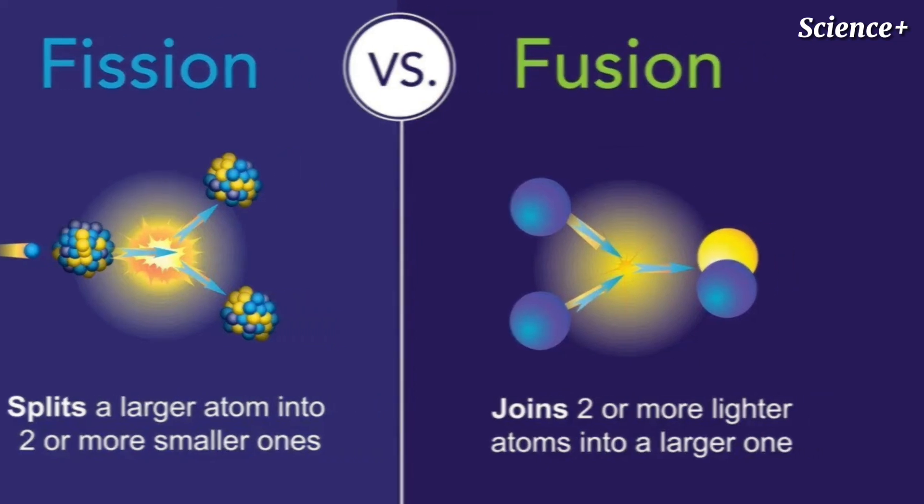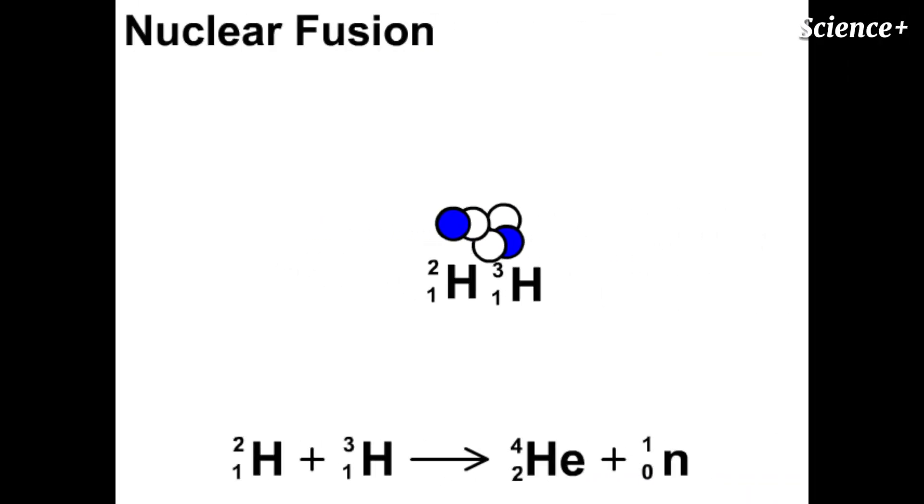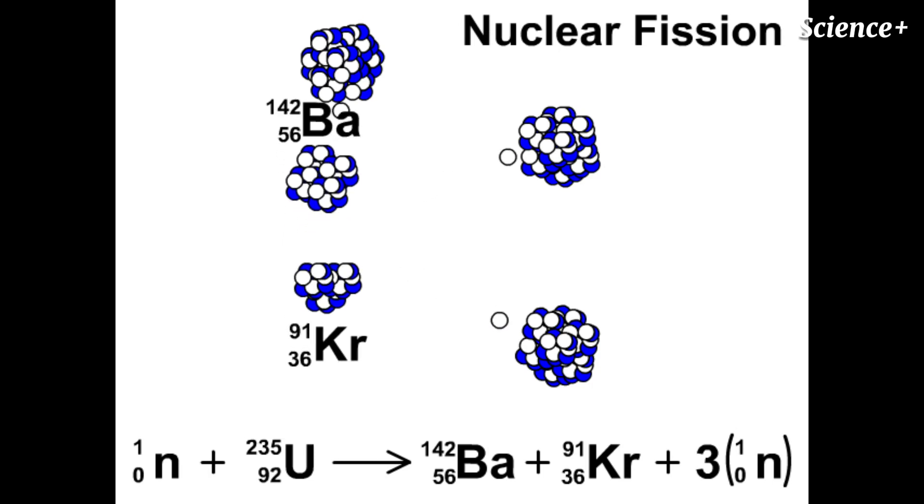That said, labs like the U.S. National Ignition Facility (NIF) and France's International Thermonuclear Experimental Reactor (ITER) have made progress in recent years with NIF reporting last summer that their reactor was able to generate up to 70% of its input energy.